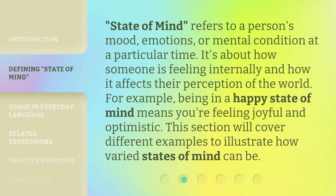State of Mind refers to a person's mood, emotions, or mental condition at a particular time. It's about how someone is feeling internally and how it affects their perception of the world. For example, being in a happy state of mind means you're feeling joyful and optimistic. This section will cover different examples to illustrate how varied states of mind can be.